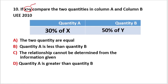The two quantities need not both be positive or both be negative. Quantity A is defined as 30% of x, which equals 0.3x. Quantity B is 0.5y.